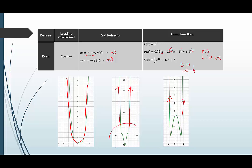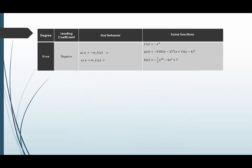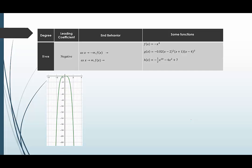There are things that happen in the middle — some dips, some minimums, some turning around — but this is what the leading coefficient test does: it tells us about the end behavior. We then focus on filling in the highs, the lows, and the zeros separately. Now we're going to look at an even-degree polynomial, but this time the leading coefficient will be negative.